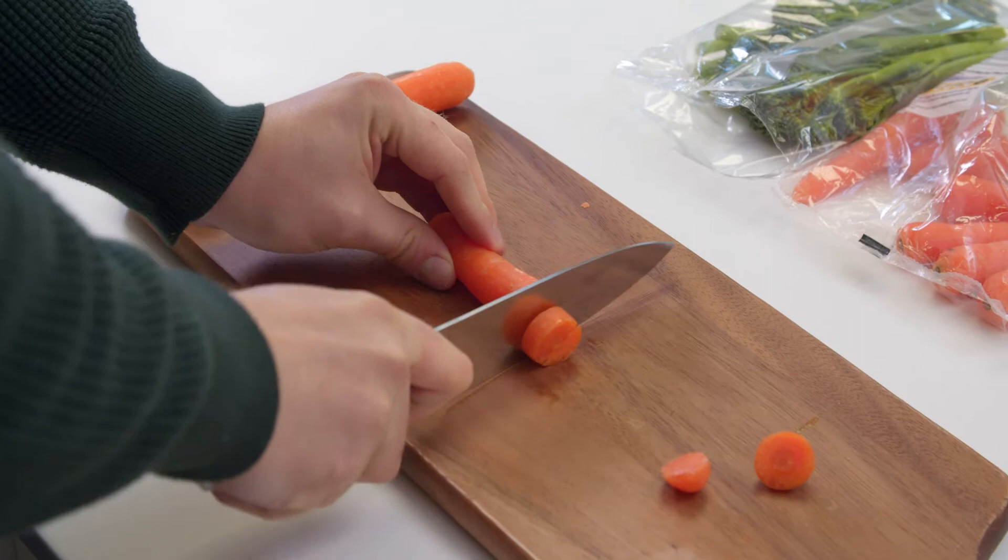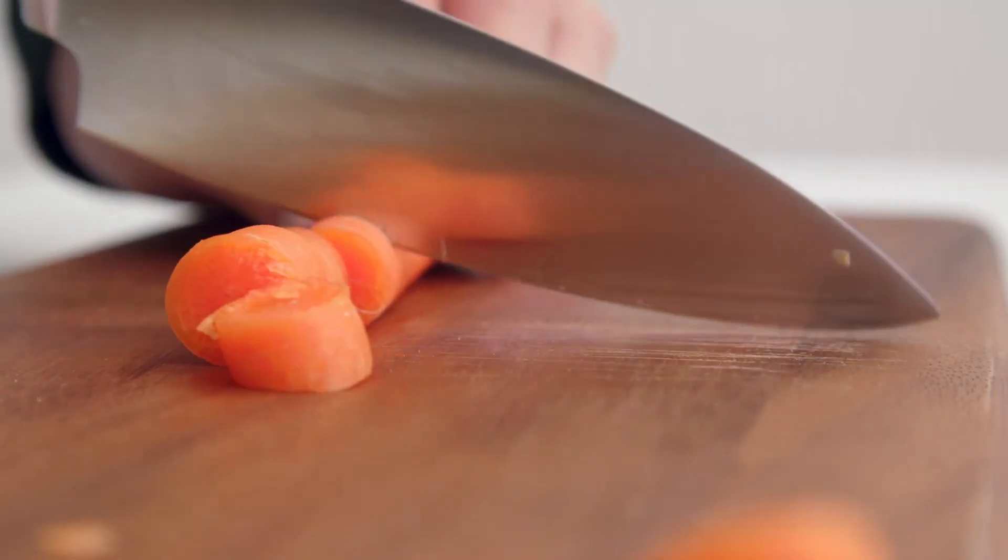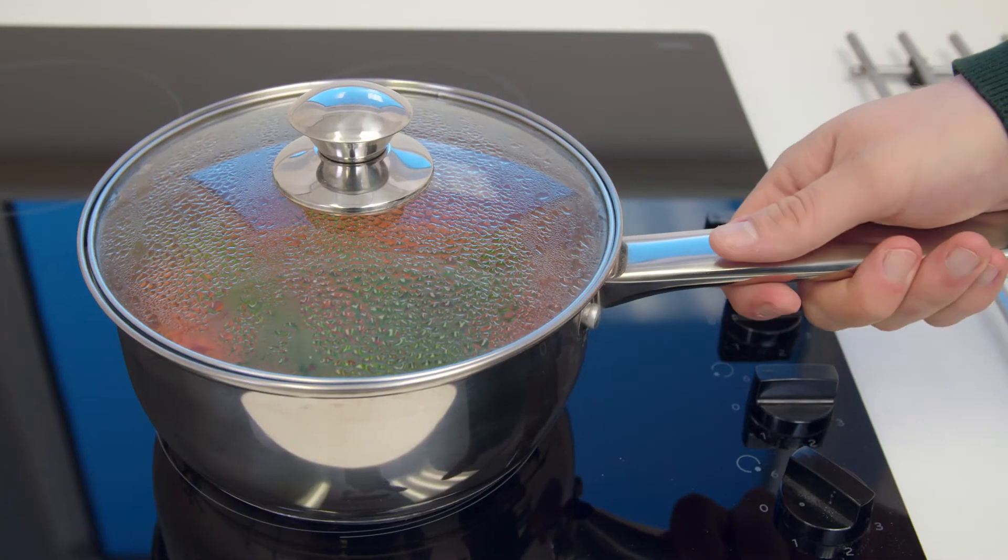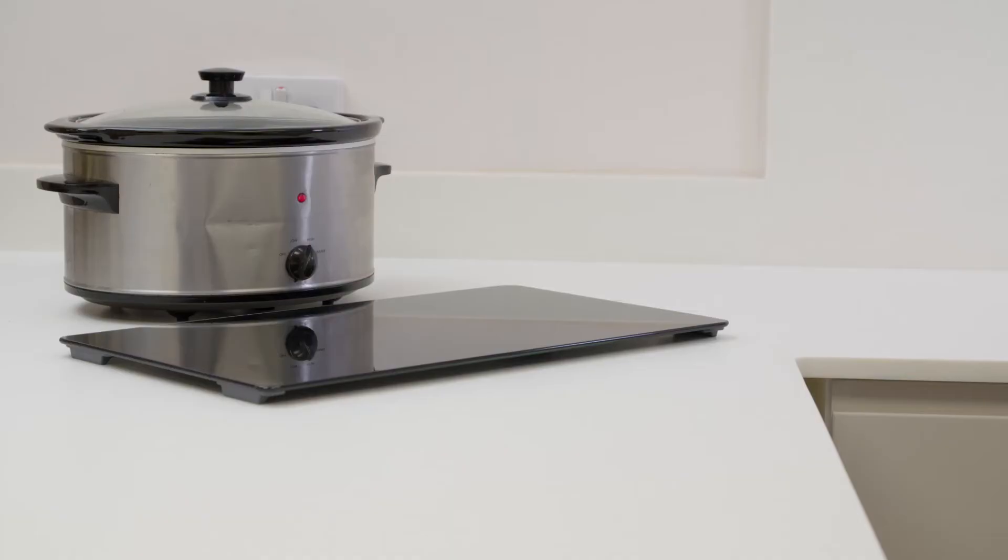Use a worktop saver or cutting board when cutting and preparing food, and use a worktop saver or trivet with rubber feet to protect your Mirrorstone surface from hot pans.